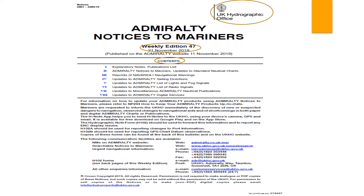Similarly for Sailing Directions in Section 4 — there are a number of publications depending on geographic location, and if there are any changes, they are listed there. Section 6 provides corrections to the Admiralty List of Radio Signals, or ALRS. There are a number of ALRS publications depending on their purpose, not geographic location, and any corrections to those are listed in Section 6.